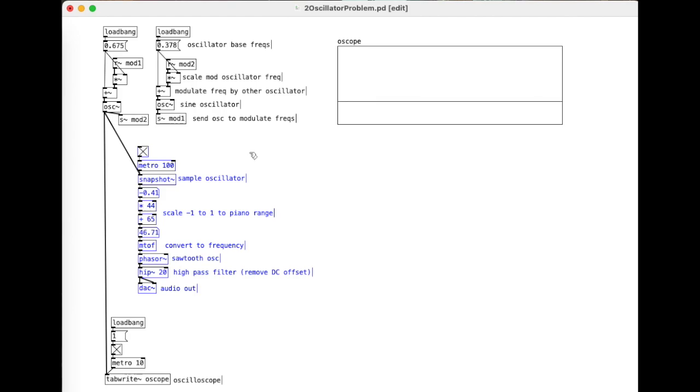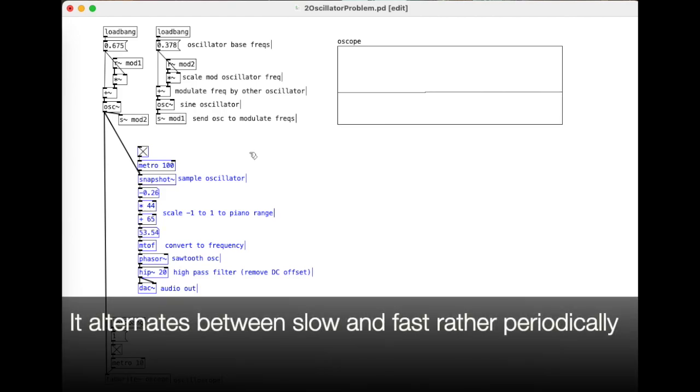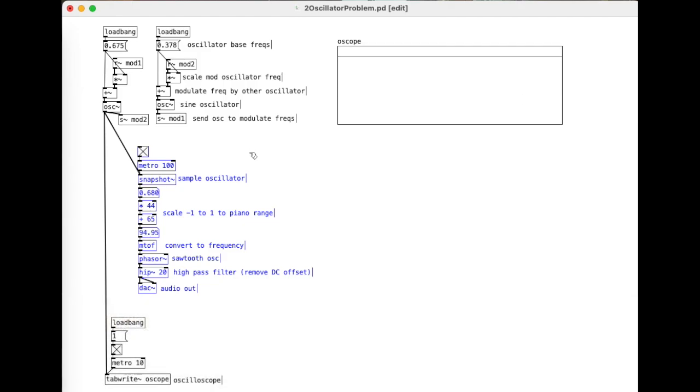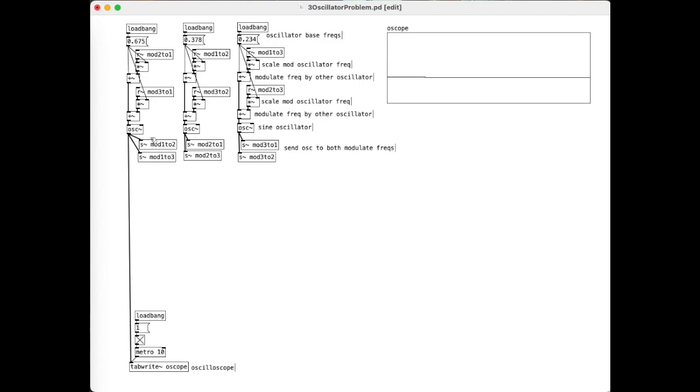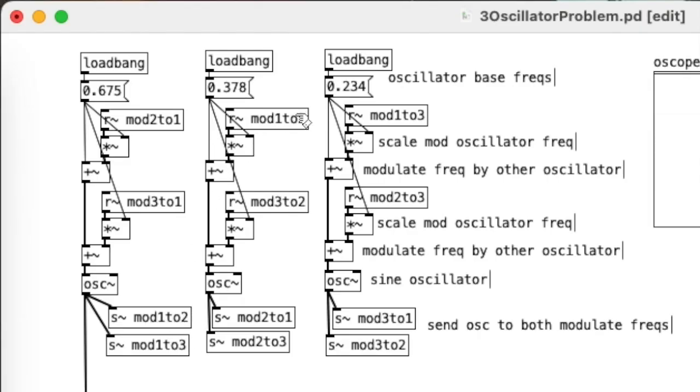Okay, let's add our third oscillator. Now one, two, three oscillators. This oscillator one mods number two and three, this oscillator two mods one and three, and then oscillator three mods one and two.